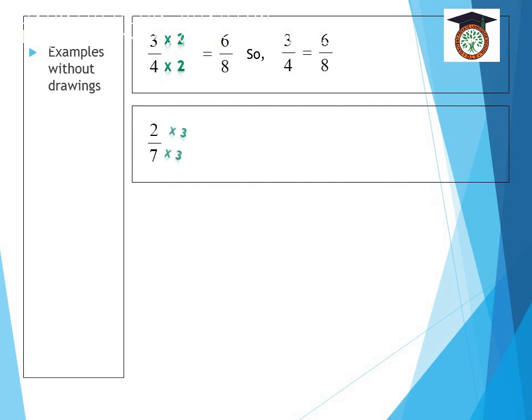So 2 times 3 and 7 times 3. 2 times 3 is equal to 6 and 7 times 3 is equal to 21. So two sevenths is equal to 6 over 21.